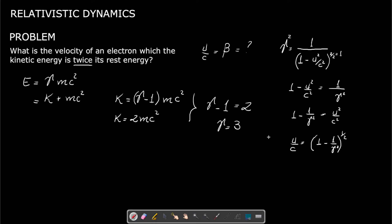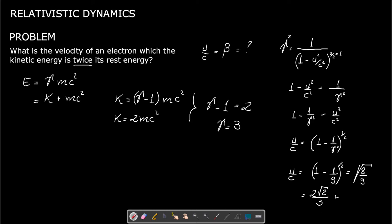Now, if gamma equals 3, then u over c equals the square root of 1 minus 1 over 9, which is the square root of 8 over 9, equal to 2 times the square root of 2 over 3, which is approximately 0.94.